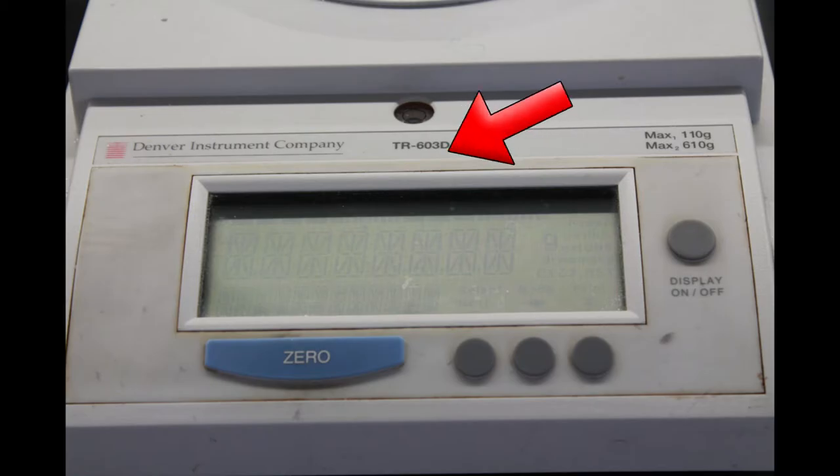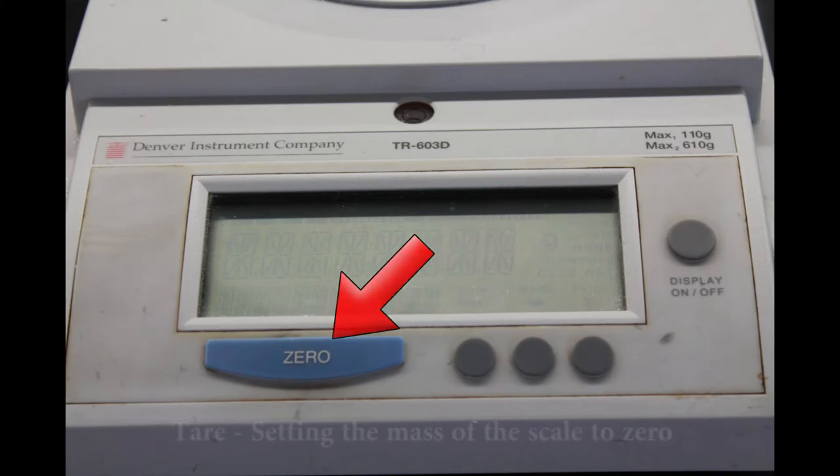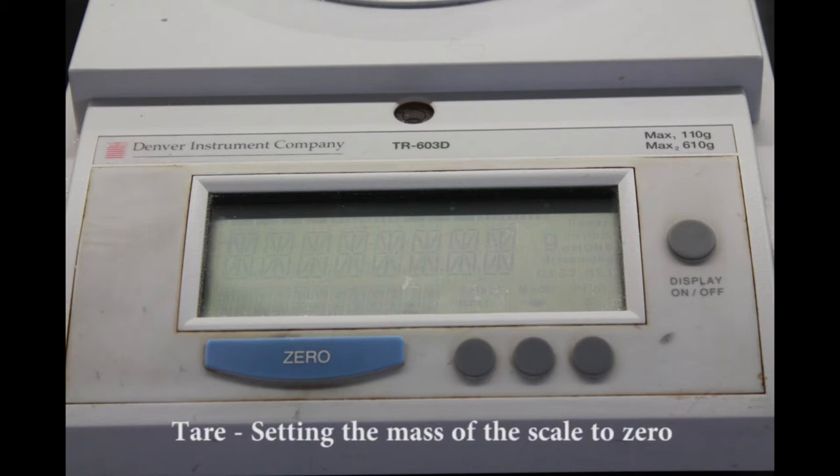After leveling your balance, it is ready for use. Here is the on-off switch, and here is the zero button. It's also known as the tare button. To tare your balance means that you are going to set the displayed mass on the balance equal to zero. Now we are ready to weigh an object.